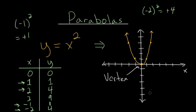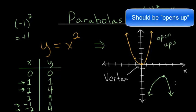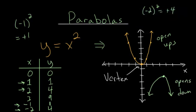And the vertex is always either the lowest point of a parabola or it's the highest point. You could have a parabola that looks something like this, where the vertex would then be the highest point. And what we say is that this parabola opens up and this parabola opens down. So with that in mind, let's take a look at some example problems.